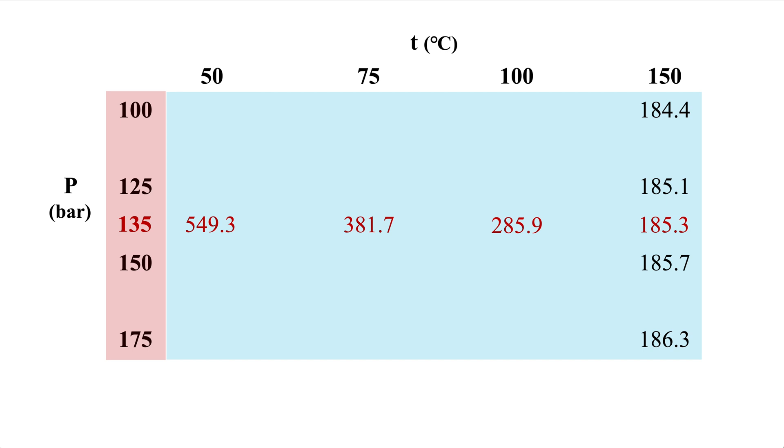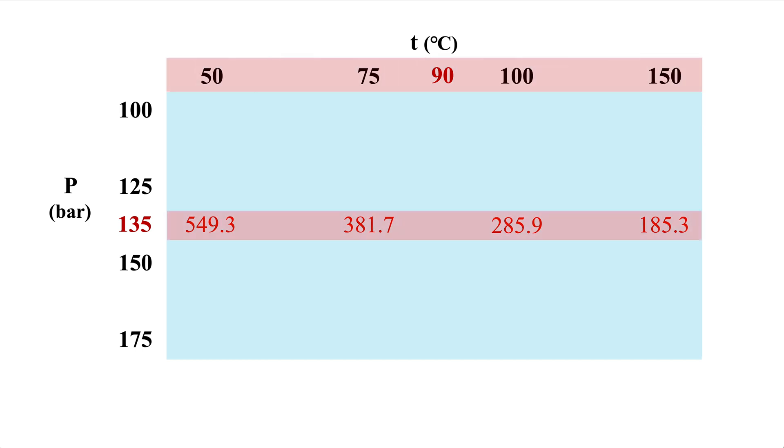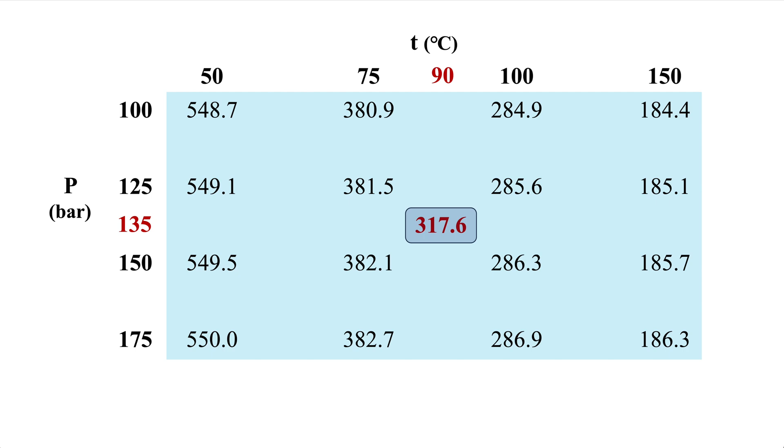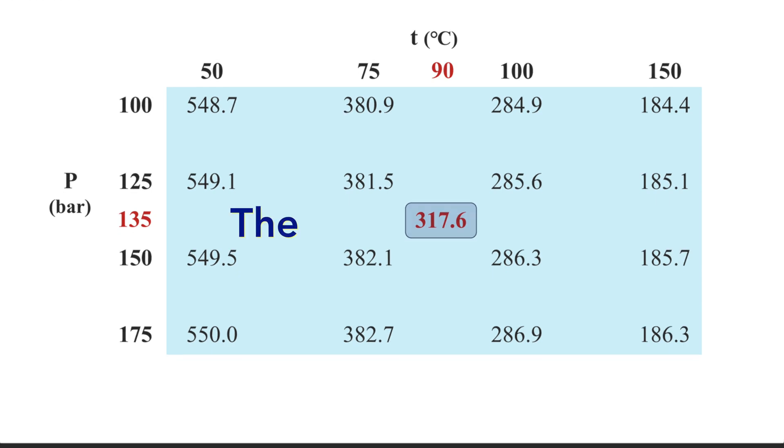Now we have a new row formed at 135, and we can move to step two to make one last interpolation at 90. So the interpolation will include the values of t and the new row, and the result will be 317.6. And this is the value of viscosity at 135 bars and 90 degrees Celsius.